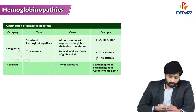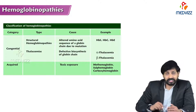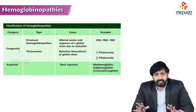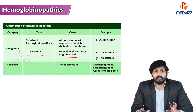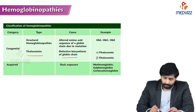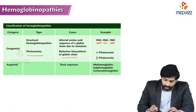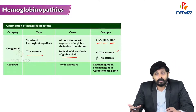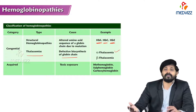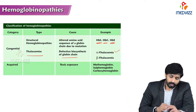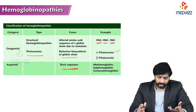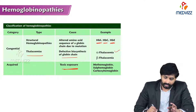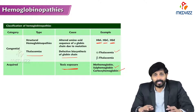Congenital hemoglobinopathies include structural hemoglobinopathies due to alterations in amino acid composition of a globin chain caused by mutations, and thalassemia due to defective synthesis of globin chain — specifically absolute deficiency in synthesis. The resulting hemoglobins include hemoglobin S, hemoglobin C, and hemoglobin E. Beta thalassemia results from a defect in beta chain synthesis; alpha thalassemia from a defect in alpha chain synthesis. Acquired types arise from toxic exposure to substances like carbon monoxide, producing methemoglobin, sulfhemoglobin, and carboxyhemoglobin — deactivated forms of hemoglobin.